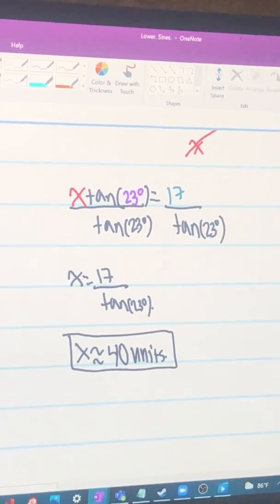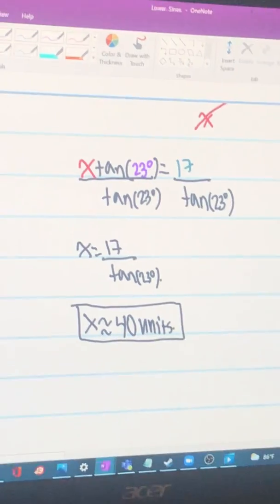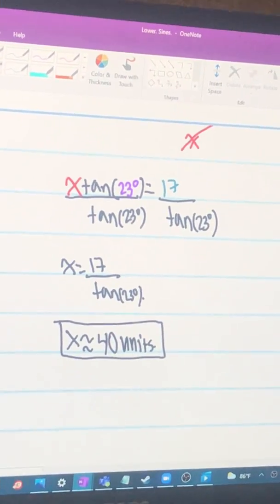Once you put it in your calculator, you should get that X is approximately 40 units, and that is what X would be in this problem.